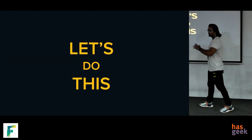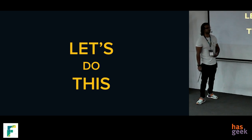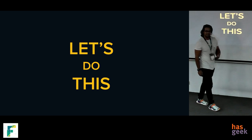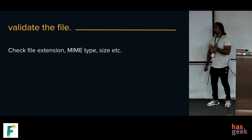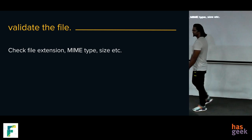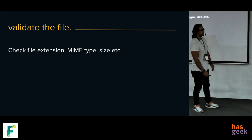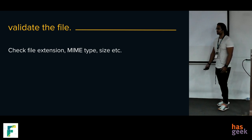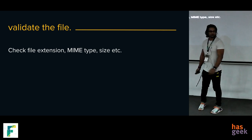We have the requirements and we're all smart minds in this room. Let's brainstorm how we could solve this problem, which might seem simple initially, at scale. We'll go through the requirements one by one. The first thing was validating the image — sounds pretty simple. We take the image, check the extension, the MIME type, the size, and based on our constraints we either let it go or bail out.